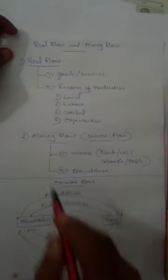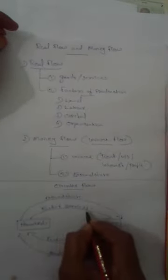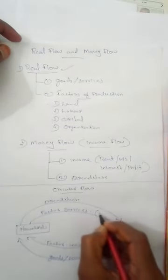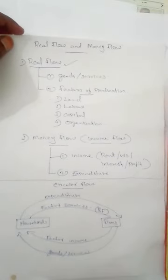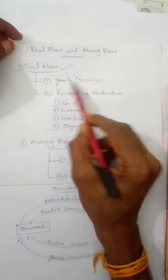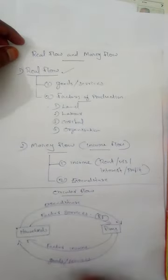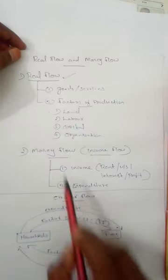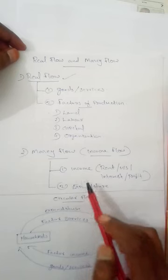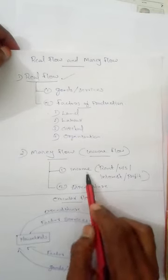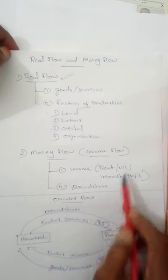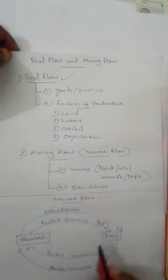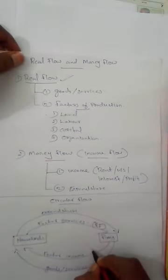Now we identify which flows belong to real flow and which belong to money flow. Real flow has two components: goods and services, and factors of production. So factor services belong to real flow, and goods and services also belong to real flow. For money flow, income — which means rent, wages and salaries, interest, and profit — is factor income, so this is called money flow.